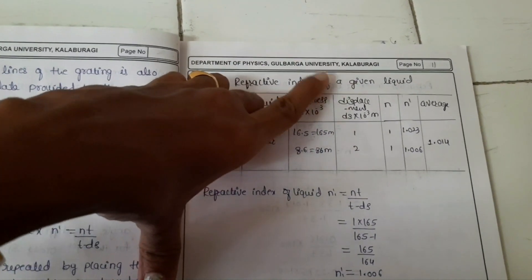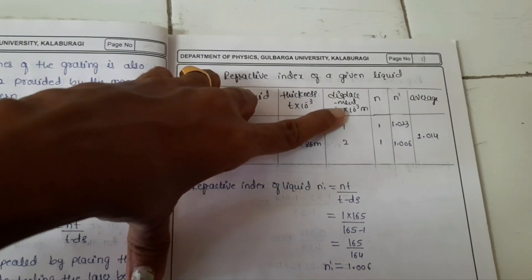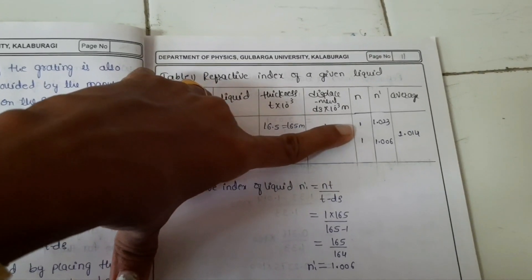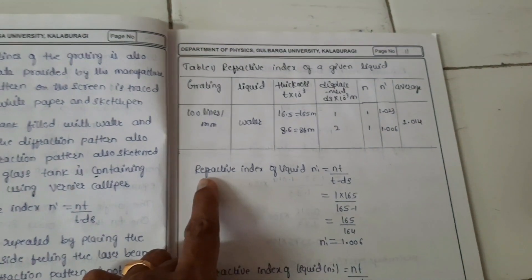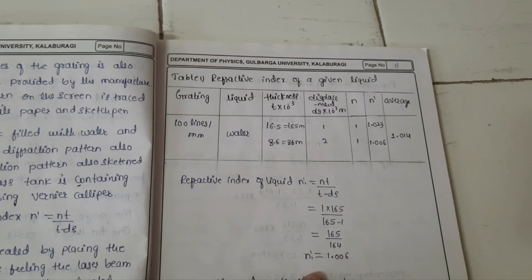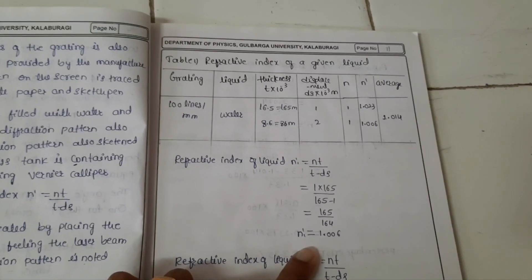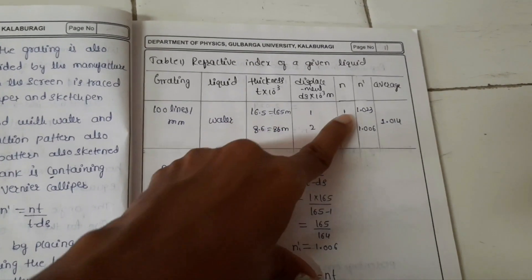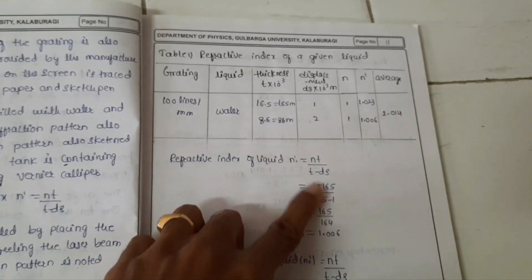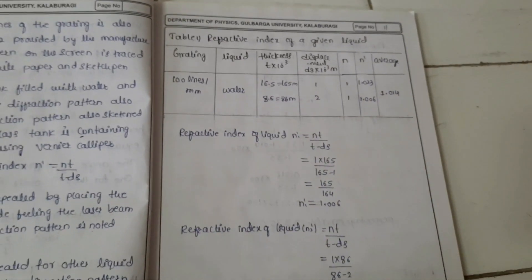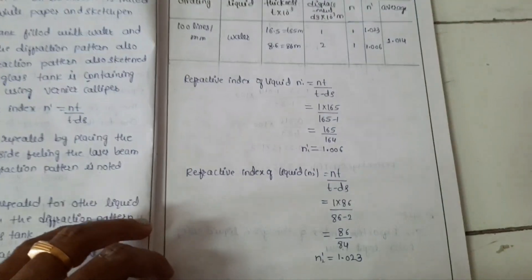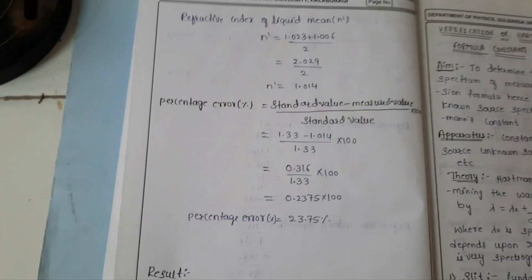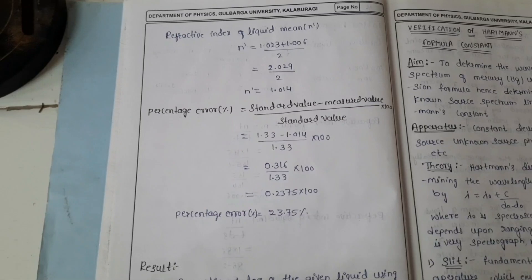1, 2. The displacement. Then refractive index of water is 1. N prime you should find out. There is a formula to calculate N prime. You should put the values in this formula. So for 16.5 you will get the value. And similarly for another thickness 18.6 you should put in that formula, N2 prime will get. After that you should take the average of these two. That is about 1.014.